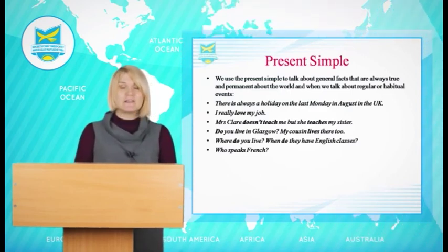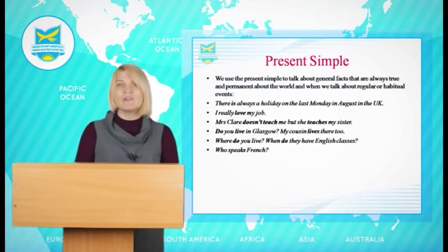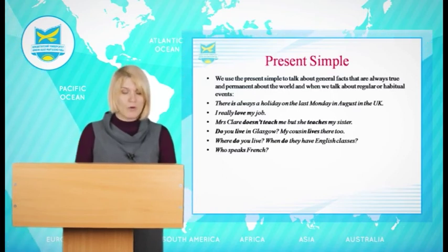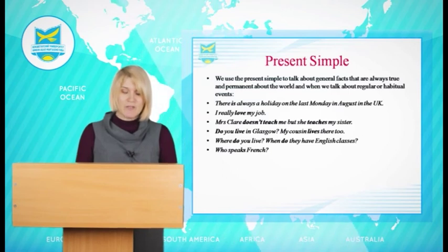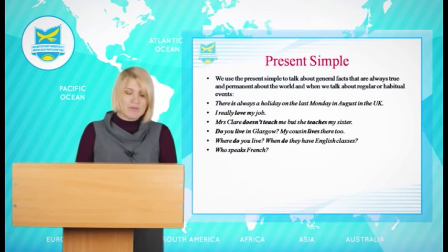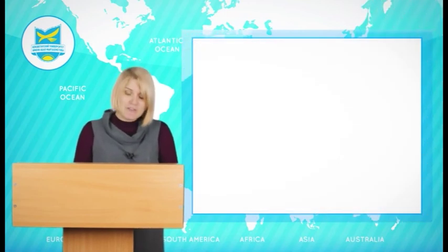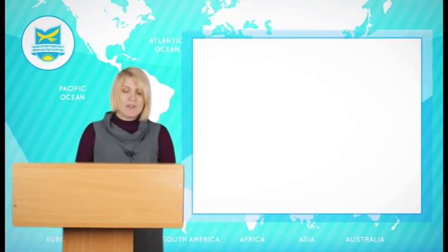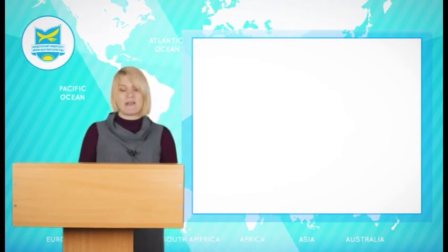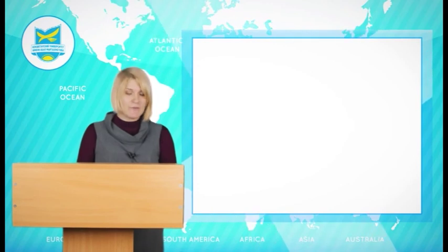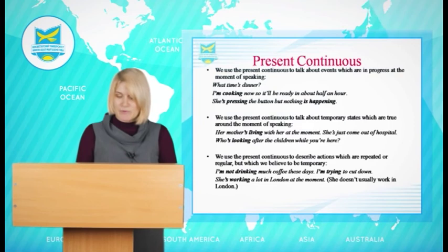We use the present perfect for recently completed single actions when the result is important in the present: I have broken my leg — result: I can't walk. We often use 'just', 'already' (sooner than expected), and 'yet' for emphasis: The taxi has just arrived. She's already told them what happened. They've finished their work already. Have you already eaten? Have they finished yet? He hasn't seen the film yet. We can also use 'recently', meaning a short time ago: Have you spoken to them recently? In American English, people often use the past simple instead of the present perfect.